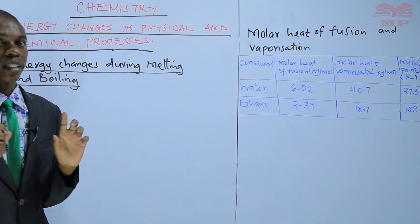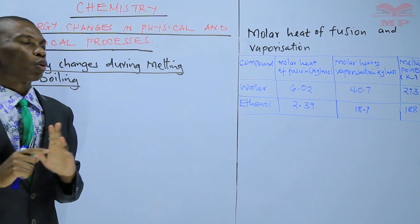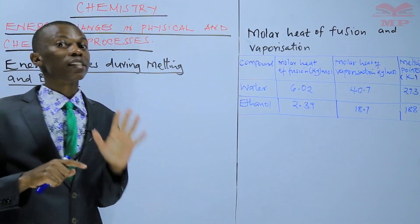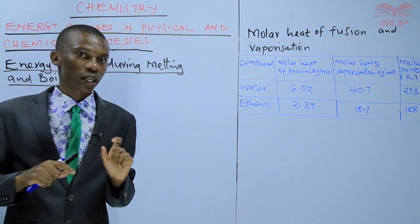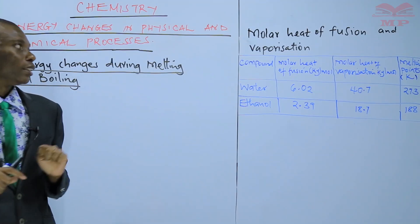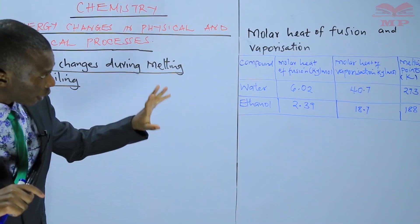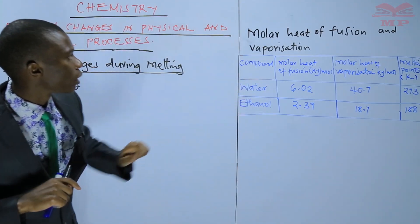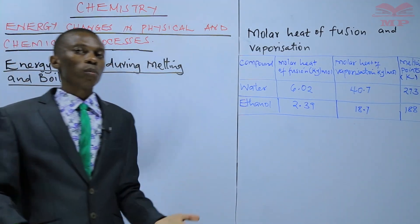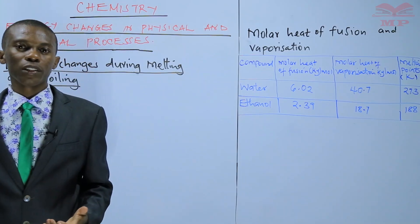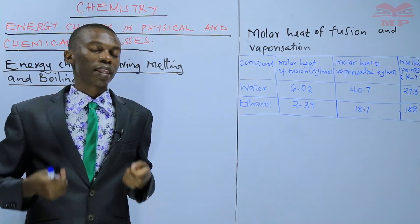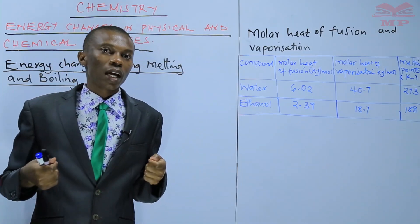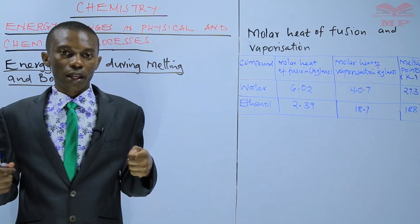That is what I wanted you to understand very well in this topic. You should be able to explain the relationship between molar heat of fusion and melting point, and between molar heat of vaporization and melting point. The lower the molar heat of fusion or vaporization, the lower the melting point, and the higher they are, the higher the melting point.